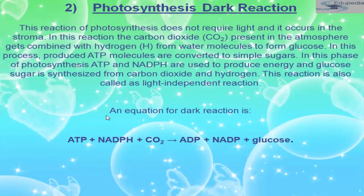Now we come to the dark reaction, also known as the Calvin cycle. This dark reaction takes place in the stroma, which is the matrix of the chloroplast. The Calvin cycle uses energy derived from light-dependent reaction compounds to make GA3P from CO₂.